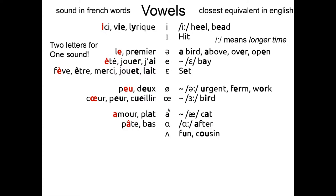The next letter is the letter A. The letter A is pronounced A, like in amour, plat. It's close to cat in English. When there is a circumflex accent, that's the accent that looks like a hat, it's the sound A, like in pâte, bas. In English you have this sound, it's like after.